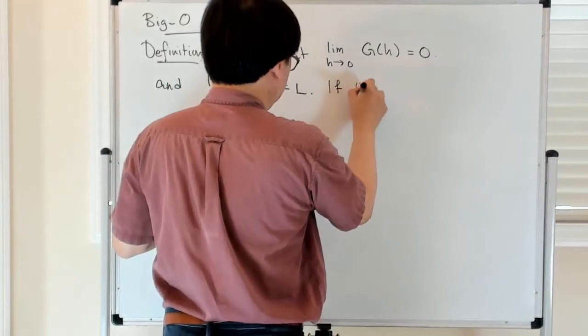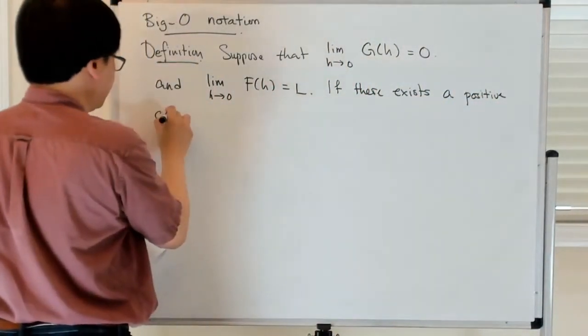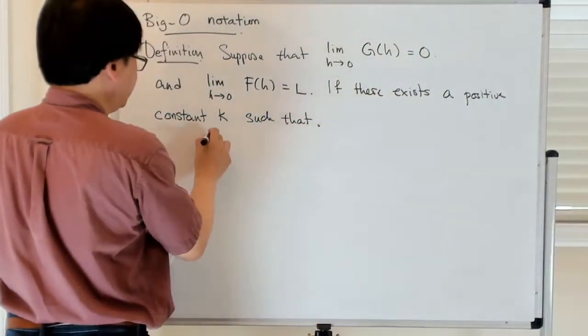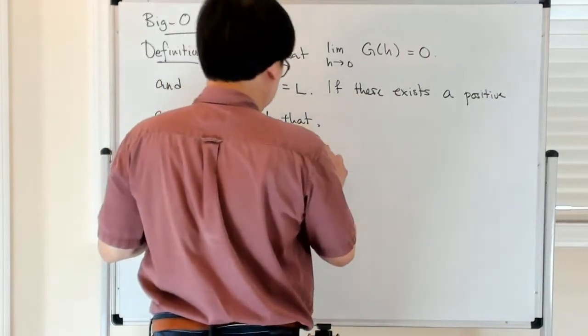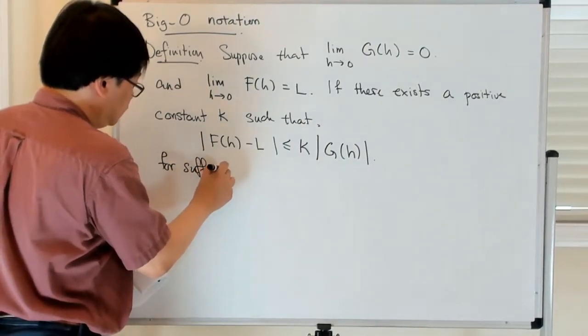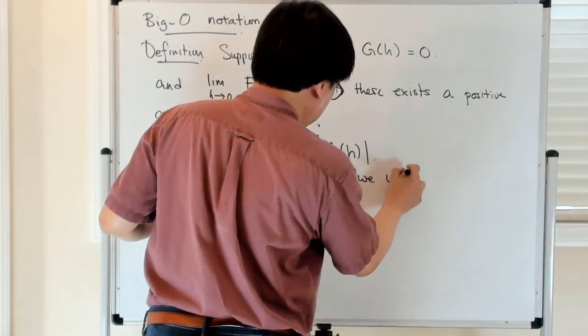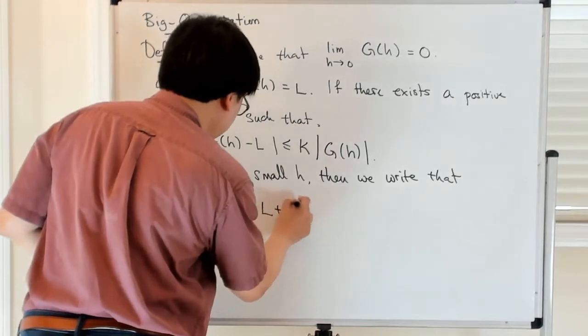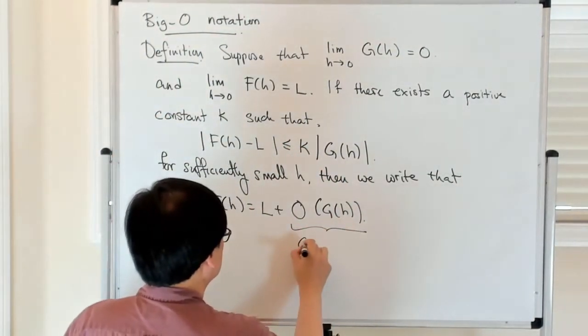So if there exists a positive constant k such that the difference between f of h and l is less than or equal to k times the absolute value of g of h for a sufficiently small h, then we say that, or we write that, f of h is equal to l plus something which is big O of g of h. And this g of h is the rate of convergence.